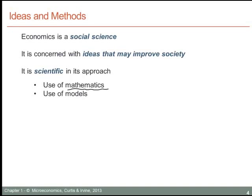The second way in which economics is scientific is that we use economic models. A model is a way of representing a set of ideas that we embody in a theory — a way of stating the essentials of a theory or hypothesis without allowing the process to become too complicated. In economics, we try to focus on the central ideas of an argument or analysis, and if we can write down those central ideas in a formal way, then we have a model of the issue we're thinking about.